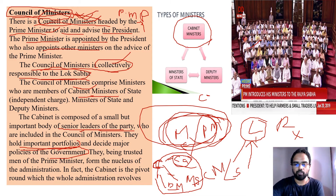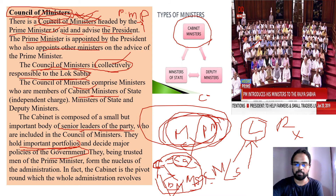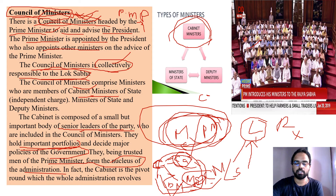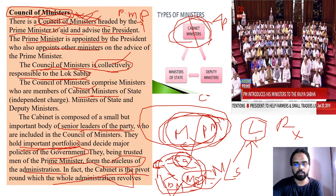The prime minister holds meetings only with cabinet ministers, not with ministers of state or deputy ministers. Ministers of state and deputy ministers work under the cabinet. The cabinet ministers inform them of decisions so they can coordinate implementation. The prime minister and cabinet ministers together form the nucleus of the administration — the cabinet is the pivot around which the entire country's administration revolves.